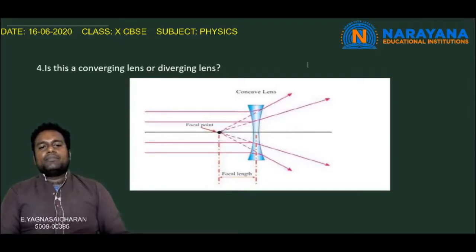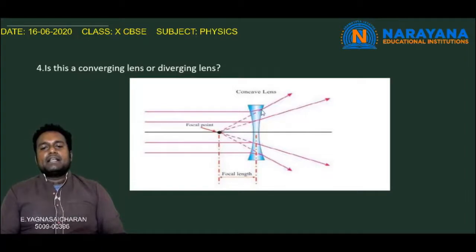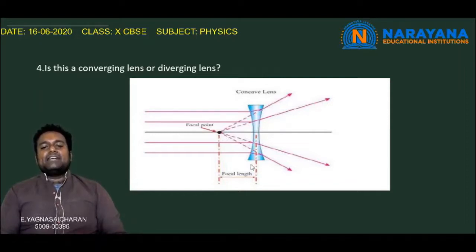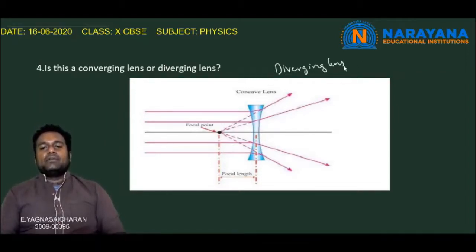The fourth question: Is this a converging lens or a diverging lens? In this picture, a parallel beam of light, after refraction through the lens, produces rays that are diverging from each other and away from the principal axis. They appear to diverge from a point known as the focus. So this lens has a diverging nature and is called a diverging lens.